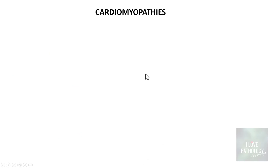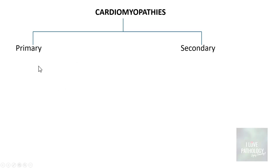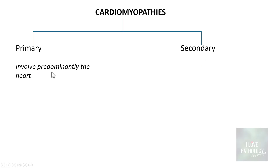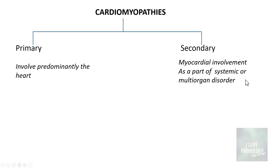Cardiomyopathies are broadly categorized into primary and secondary cardiomyopathy. Primary meaning it involves predominantly the heart, whereas secondary is basically the involvement of the myocardium as a part of a systemic disorder or multi-organ disorder.